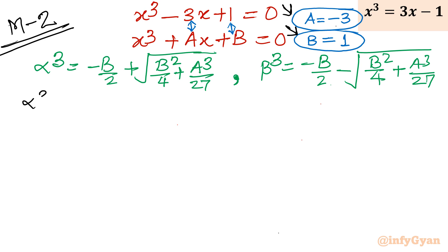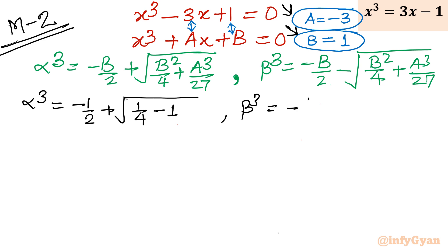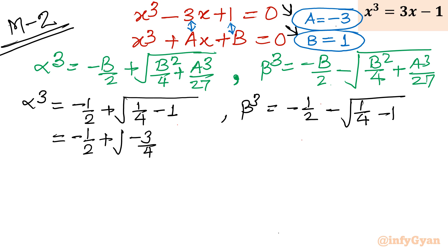The standard Cardano formulas give: α³ = -b/2 + √(b²/4 + a³/27), and β³ = -b/2 - √(b²/4 + a³/27). Substituting a = -3 and b = 1: α³ = -1/2 + √(1/4 + (-27)/27) = -1/2 + √(1/4 - 1) = -1/2 + √(-3/4). Similarly, β³ = -1/2 - √(-3/4).